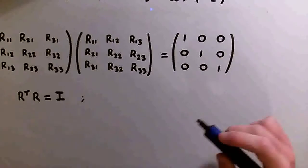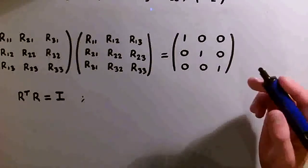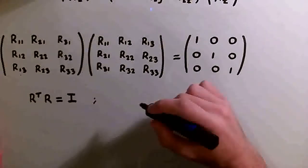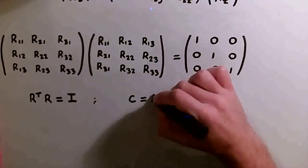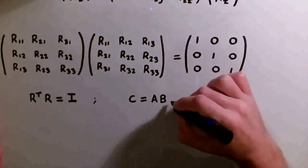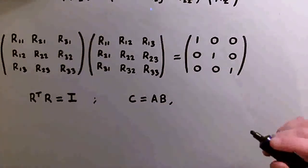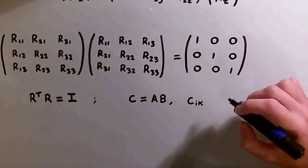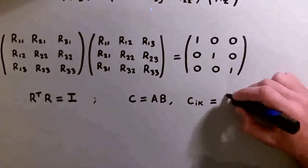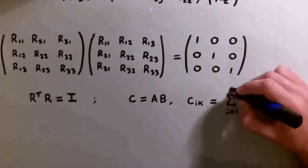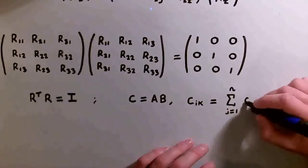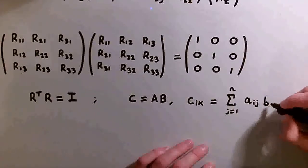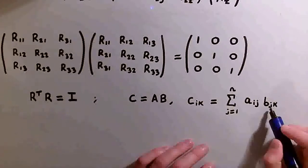To write these constraints more formally, we need sigma notation for matrix multiplication. Taking a simple example where C equals the product of matrices A and B, the individual elements of C — called C_ik — are the sum from j equals one to some integer n of A_ij times B_jk, where these are the elements of matrices A and B respectively.